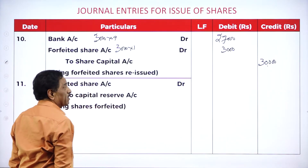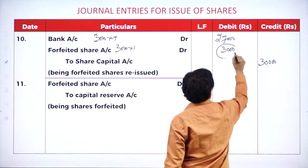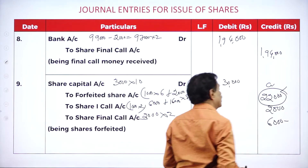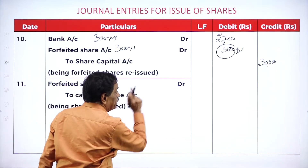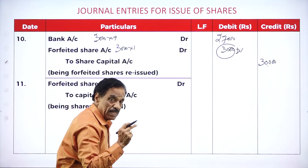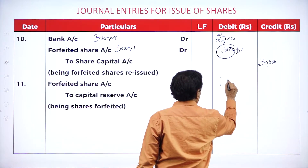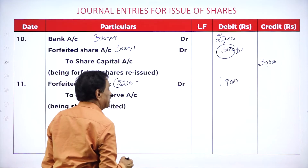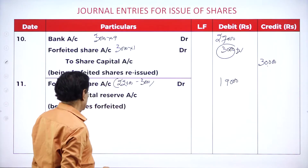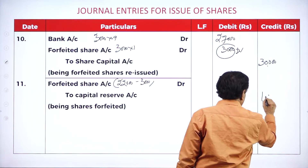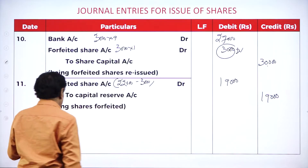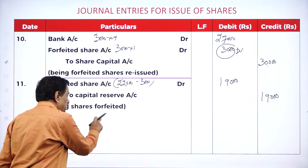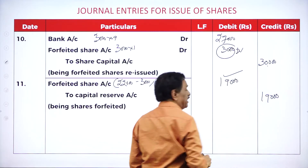Forfeited shares account — credit is 22,000. Debit entry is 3,000. So 22,000 minus 3,000 = 19,000. Forfeited shares account debit 19,000 to capital reserve account 19,000. Being the forfeited shares transferred to capital reserve to the extent of 19,000. This excess money will be kept in the company — if there is any shortage of funds, this will be utilized as capital.